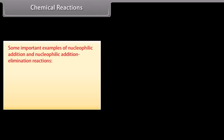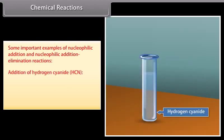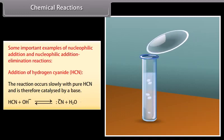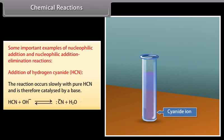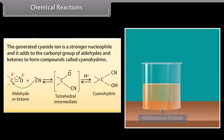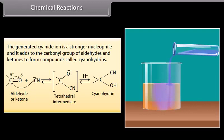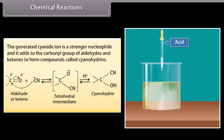Some important examples of nucleophilic addition and nucleophilic addition-elimination reactions. Addition of hydrogen cyanide: the reaction occurs slowly with pure HCN and is therefore catalyzed by a base. The generated cyanide ion is a stronger nucleophile and it adds to the carbonyl group of aldehydes and ketones to form compounds called cyanohydrins.